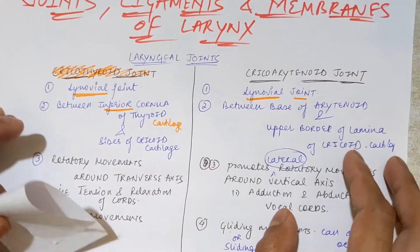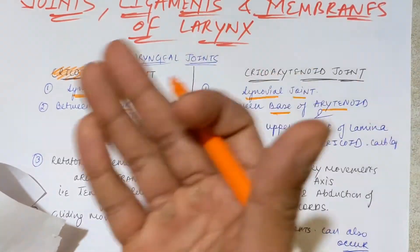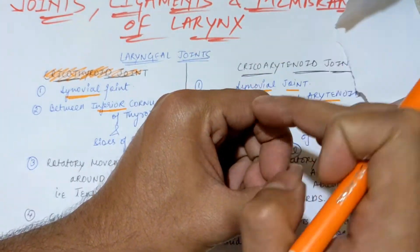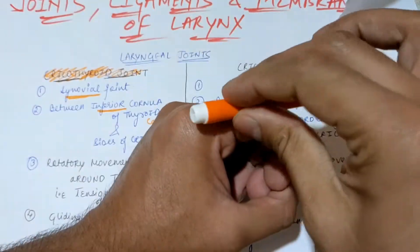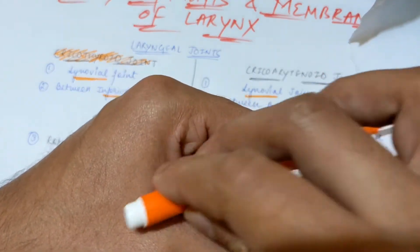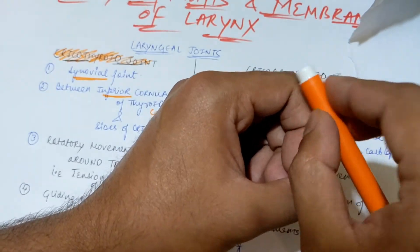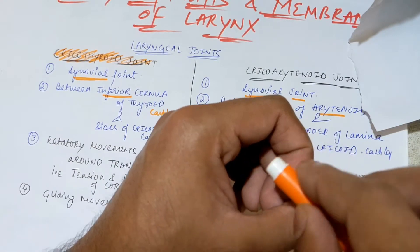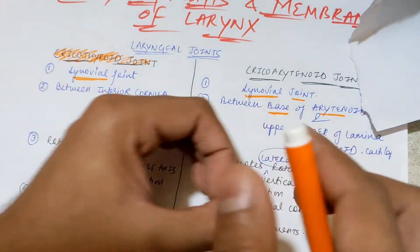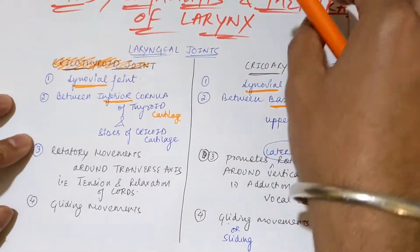For the cricoarytenoid joint, it starts from the base of the arytenoid cartilage, which is present on the superior surface of the cricoid cartilage. The base of the arytenoid attaches on the upper border of the cricoid cartilage on both sides. Because the cricoid is a ring-like cartilage with an arc anteriorly and a broad lamina posteriorly, the base attaches on the upper border, forming the cricoarytenoid joint.